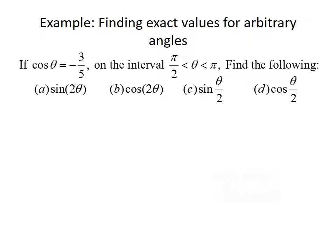Let's do an example where we find exact values for an arbitrary angle using the double angle and half angle formulas. We're given that the cosine of theta equals negative 3 over 5, on the interval pi over 2 less than theta less than pi, so we're in the second quadrant.